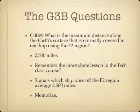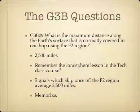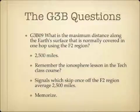What is the maximum distance along the Earth's surface that is normally covered in one hop using the F2 region? You can get about 2,500 miles in one hop off the F2 region — this is something you want to memorize. The F2 region is the highest possible ionospheric region, so you get the farthest distance off the F2. Signals skipped off the F2 region can reach up to about 2,500 miles on the Earth's surface.